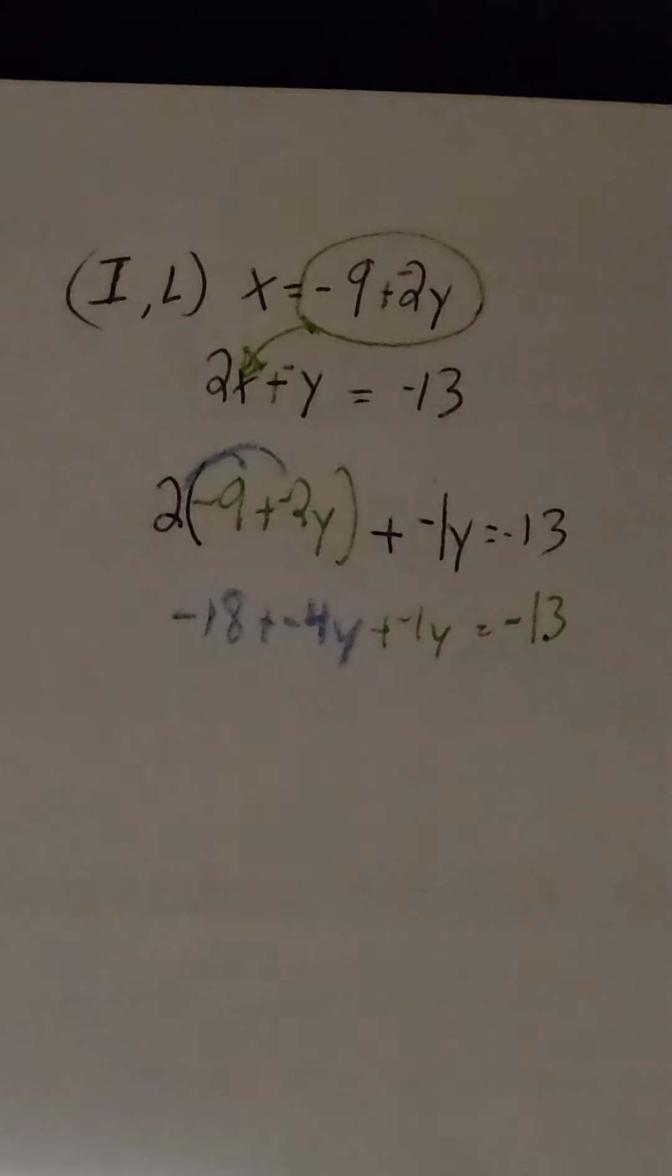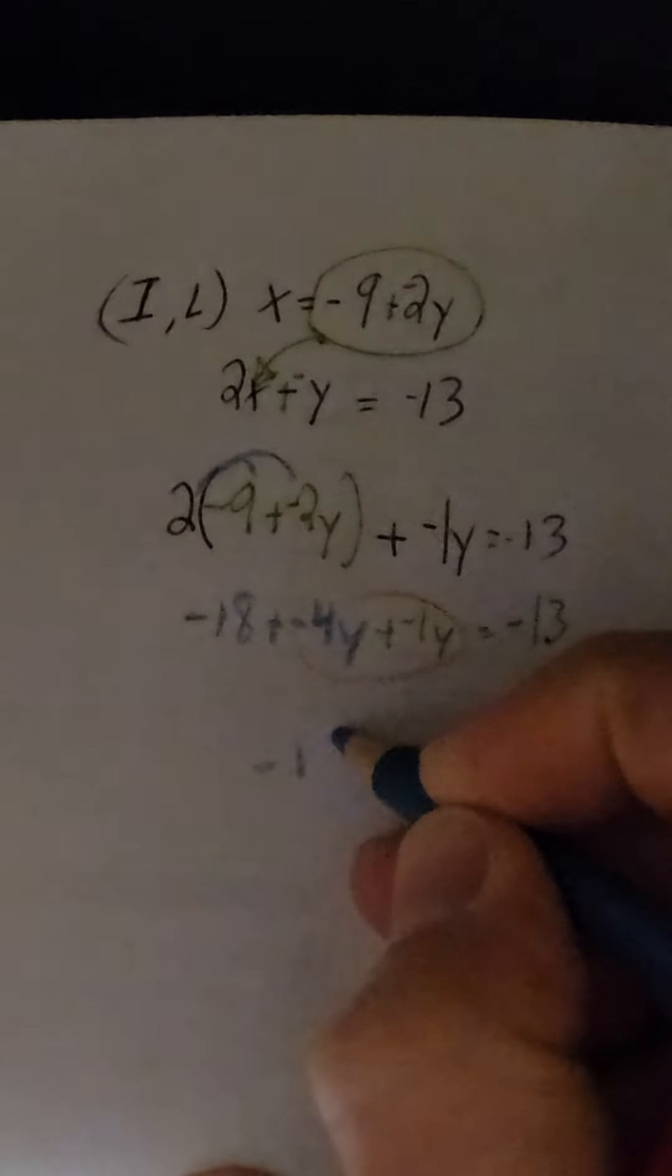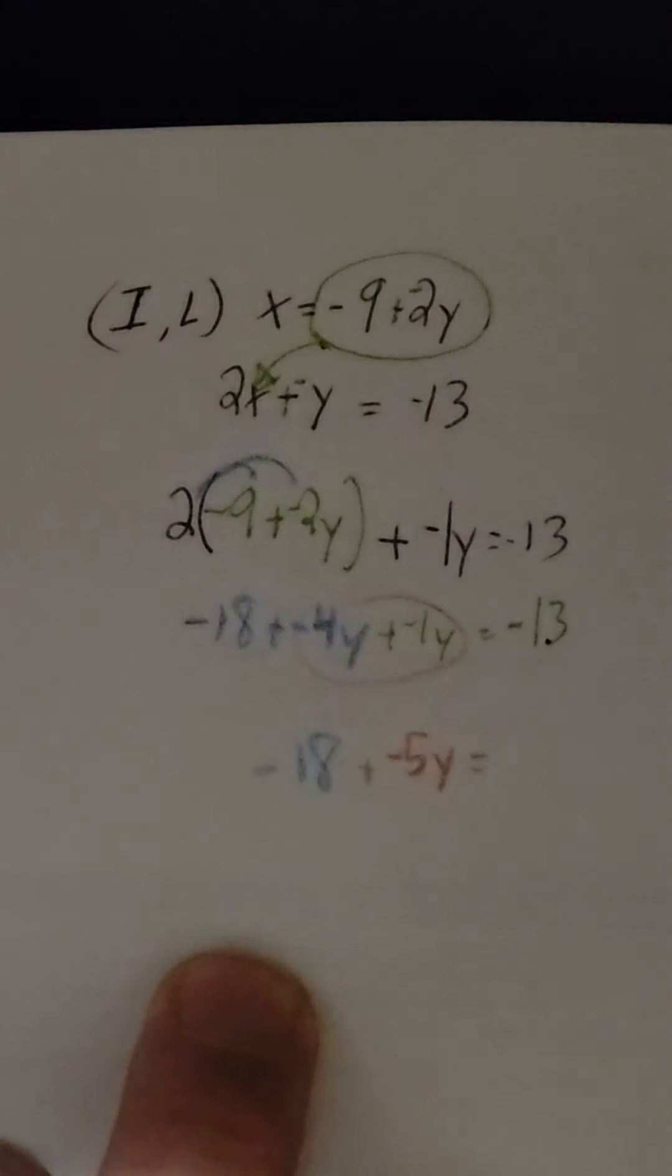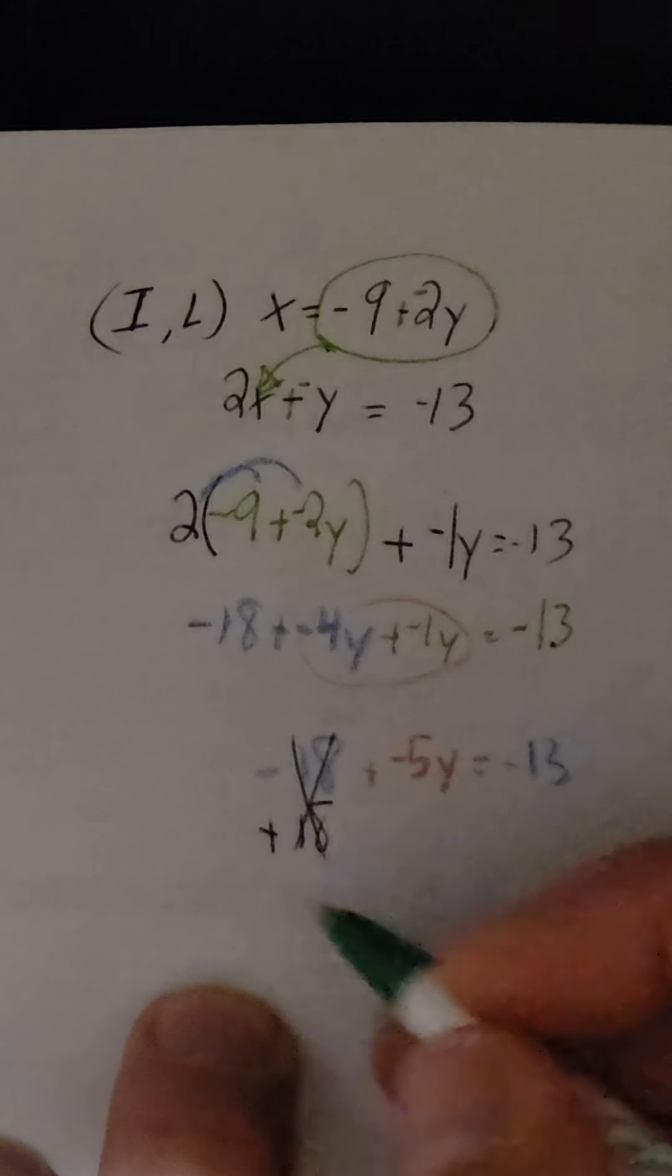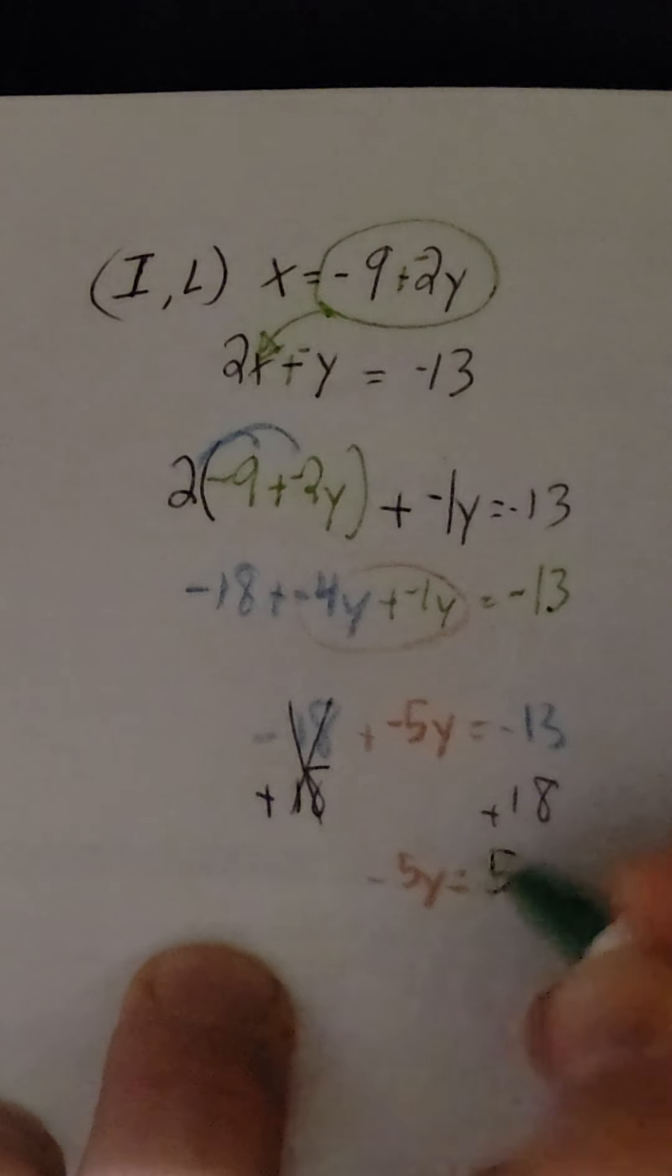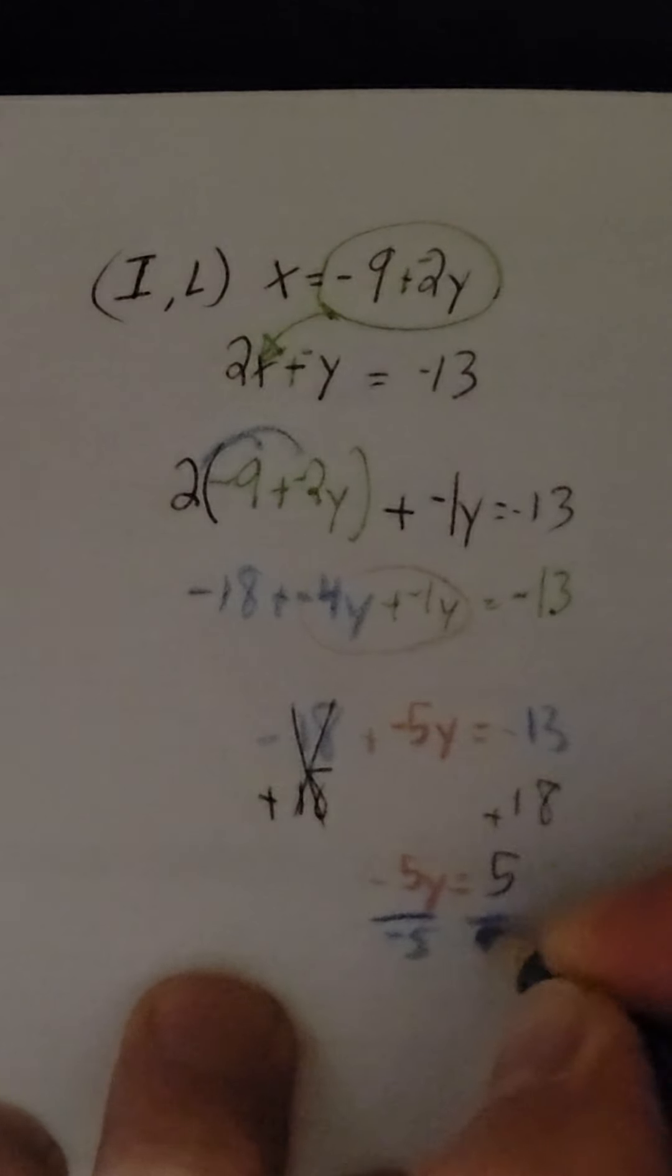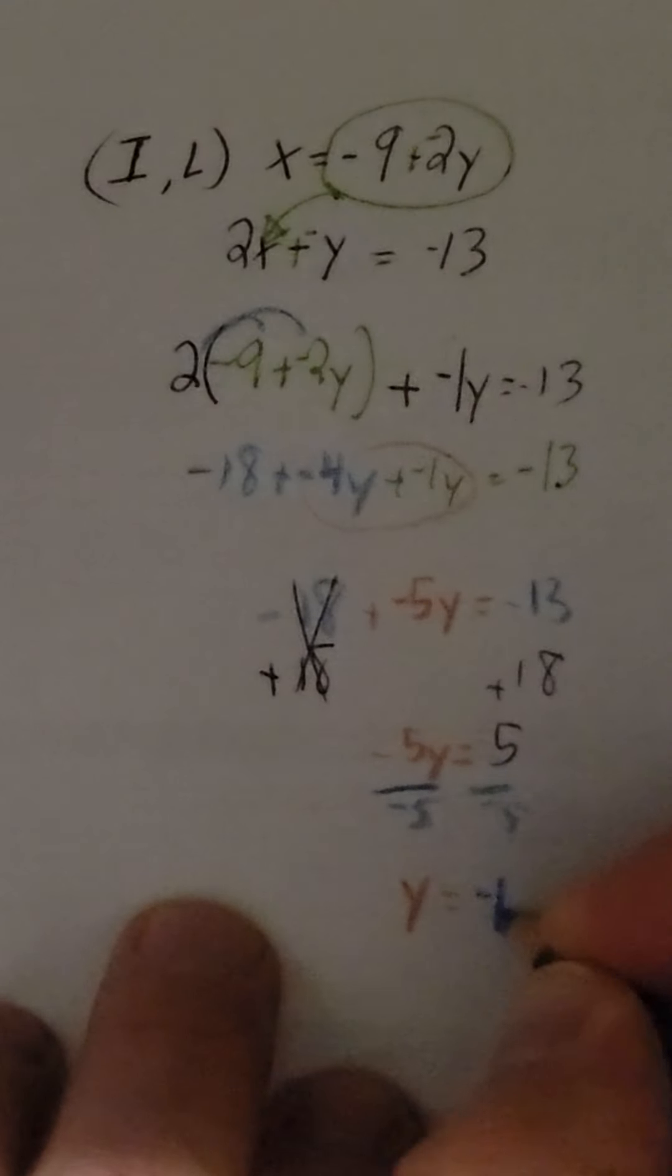From there, then, you can combine your like terms. So we're left with a negative 18 plus a negative 5y, equals a negative 13. We're going to solve that by getting rid of the negative 18. To do that, add 18 to both sides. We're left with a negative 5y, equals a positive 5. And then from there, divide by a negative 5. Y equals a negative 1.